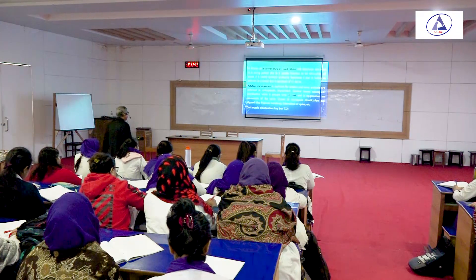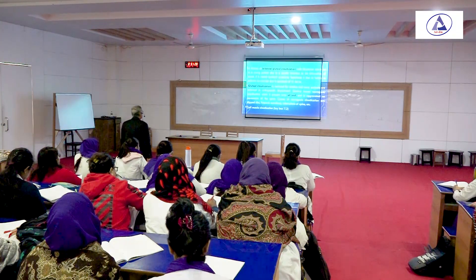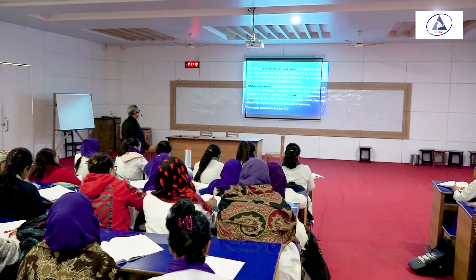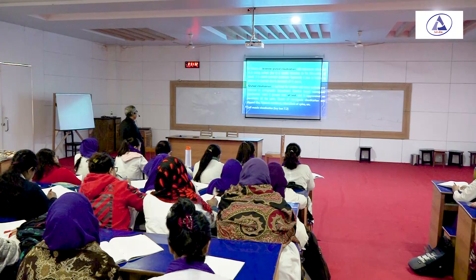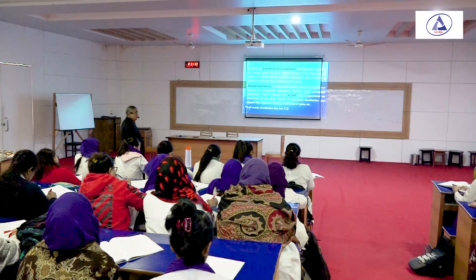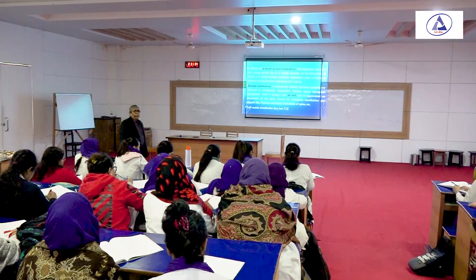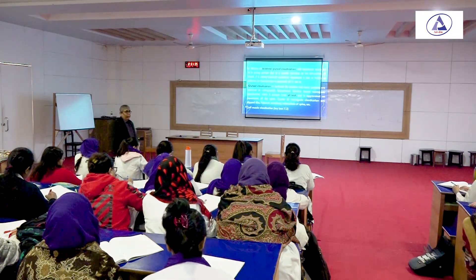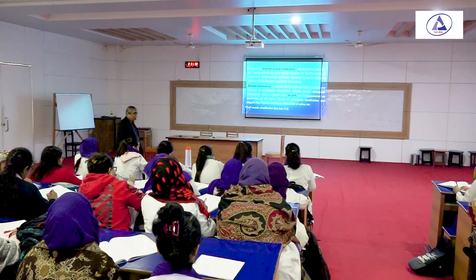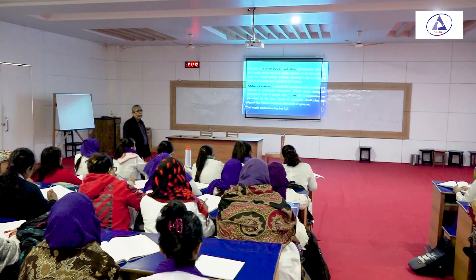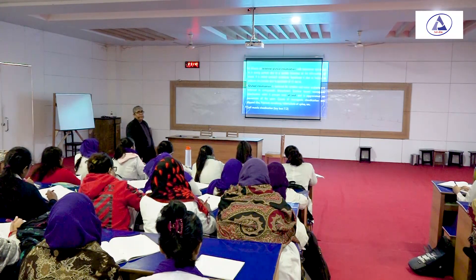This produces a sciatica-like pain. So gluteal claudication pain is confused with sciatica. But gluteal claudication is not due to nerve compression — it is due to a saddle-shaped thrombus at the aortic bifurcation.